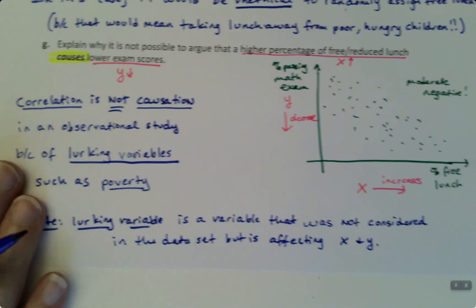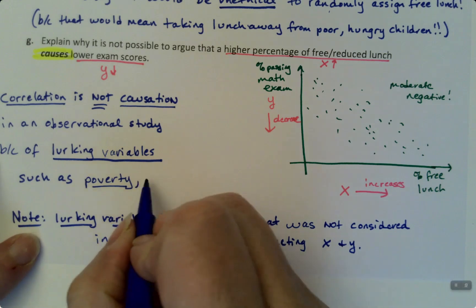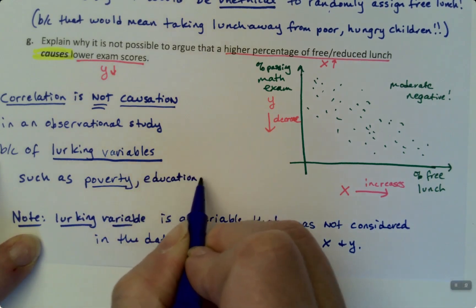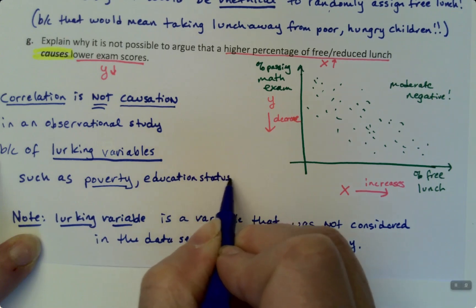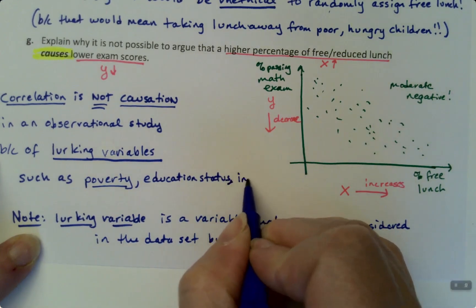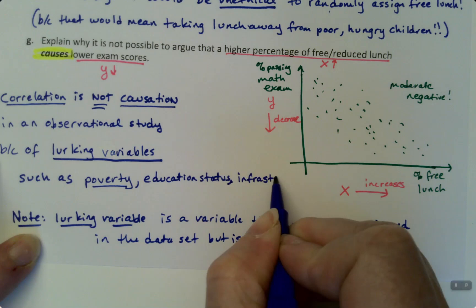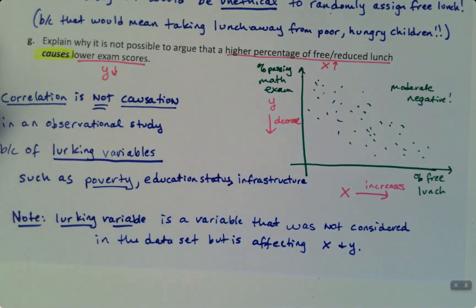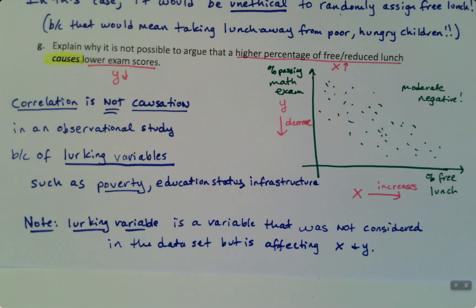There are others. You can also think of education status of the family, infrastructure. Are there good busing? Are there good pipes bringing water into your house, or are you having lead poisoning problems? I mean, there's lots of things that could be affecting what's going on in this situation.